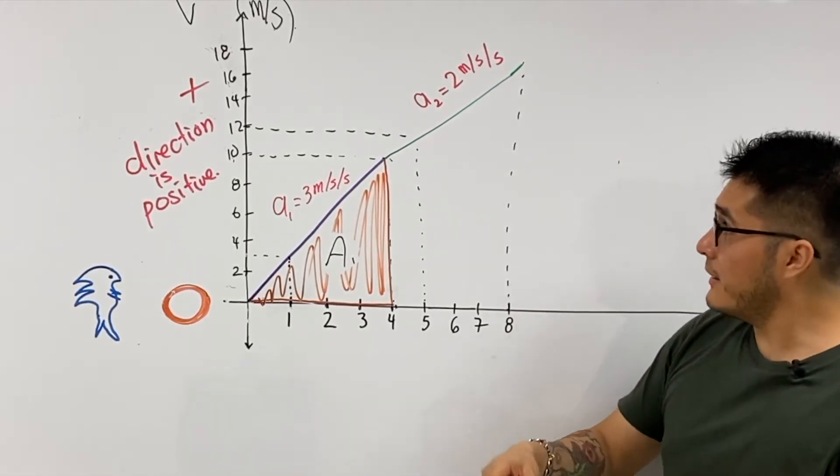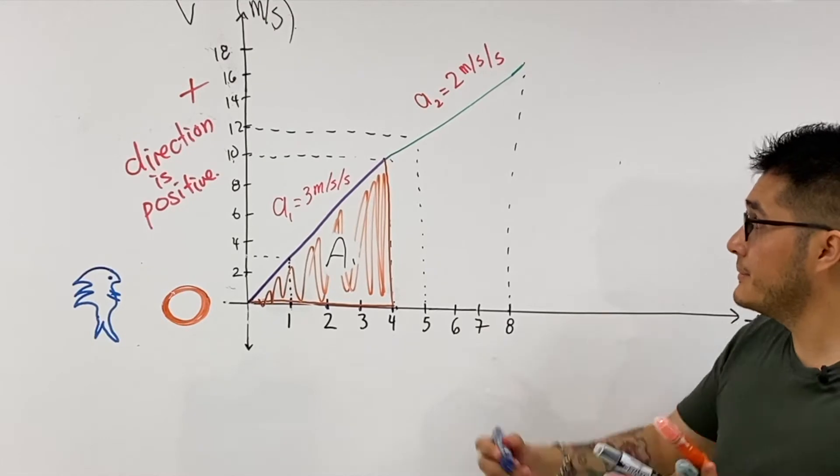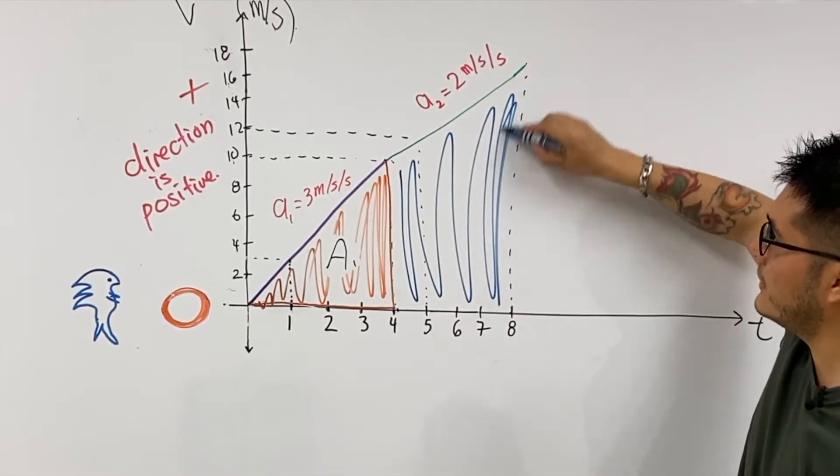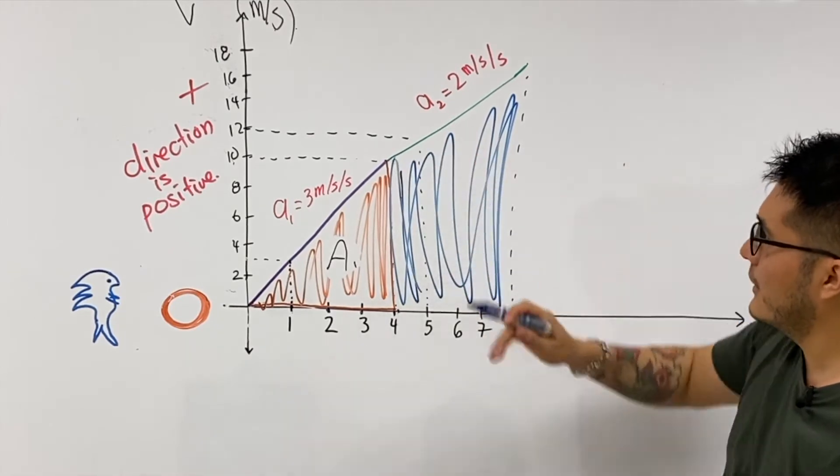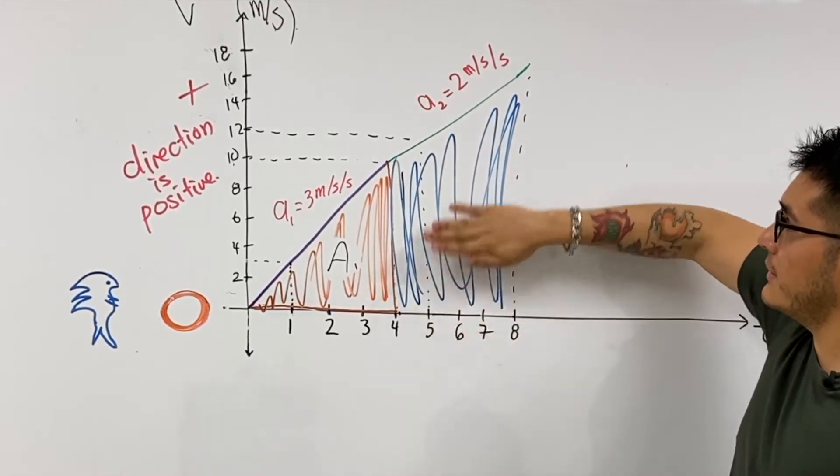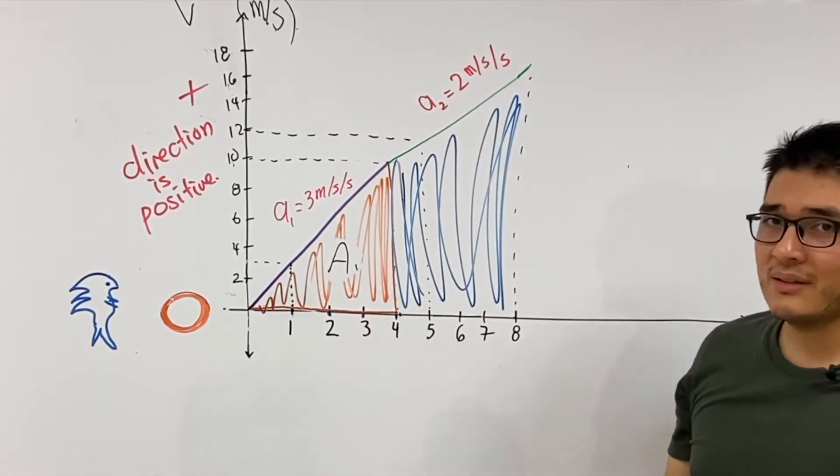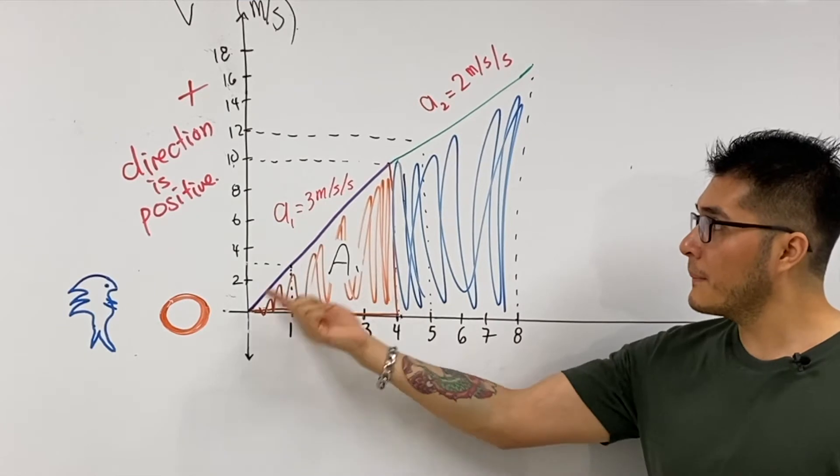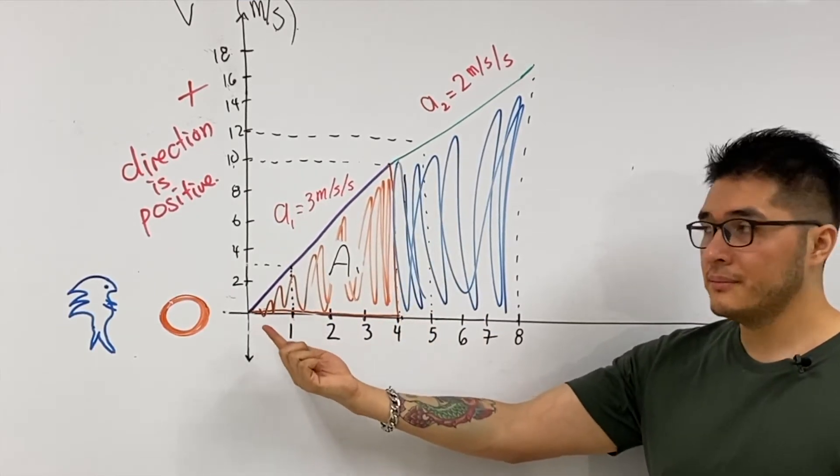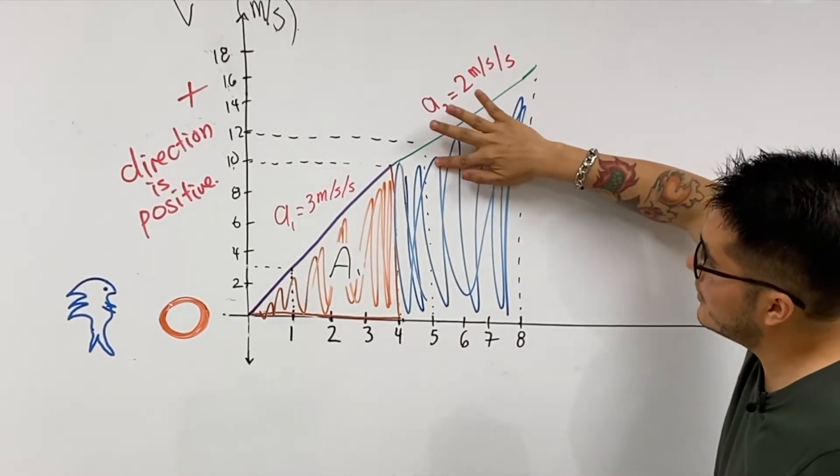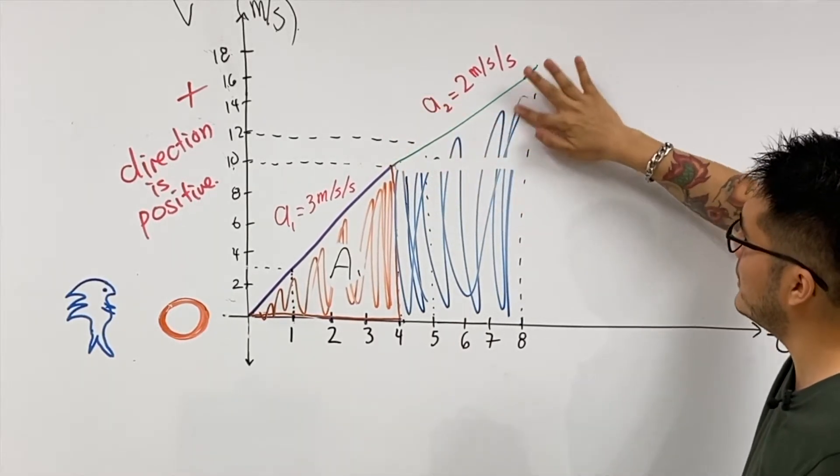Now we're going to do the same thing for the green portion. Again, we're going to calculate the area under the curve. We're going to calculate the area up until the eighth second. Let's highlight it with the color blue this time. We're interested in all of this area, but notice that this area is not so easy to calculate because it's an irregular shape that we're not so used to.